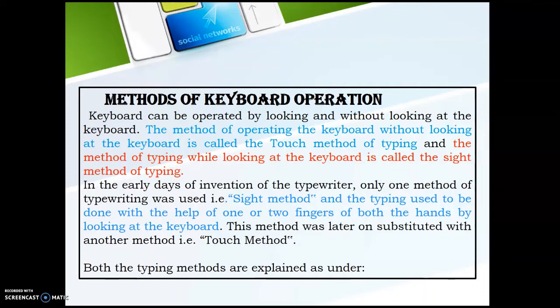In the early days of invention of the typewriter, only one method of typing was used — the sight method. That means typists used to type by looking at the keyboard, using one or two fingers of both hands. This method was later substituted with the touch method.